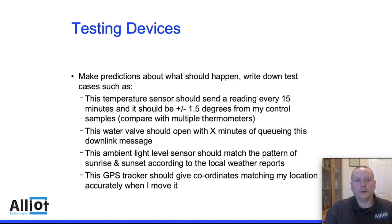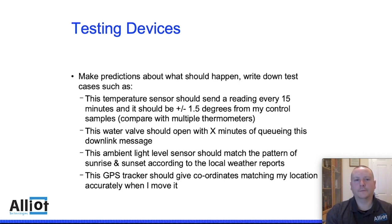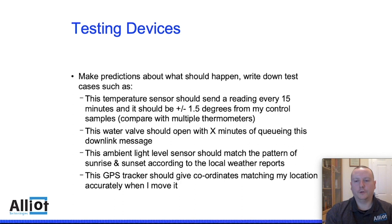Another example: if you have something like a water valve and you know it should open within X minutes of queuing a downlink message — because the device is sending uplinks at X minute intervals — then you can just observe it. Does it do what it says it does, and is that repeatable? For an ambient light sensor, you can make predictions on when light levels should go up and down based on sunrise and sunset, and observe whether that's really happening. For a GPS tracker, is it giving the coordinates it should be giving? Put the coordinates into Google Maps and see what location it's given you.